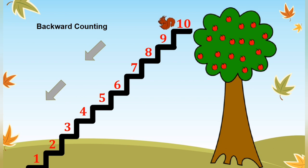Then, she will move to number 9, 8, 7, 6, 5, 4, 3, 2, 1. And here, she is on the ground. She reaches to the ground.